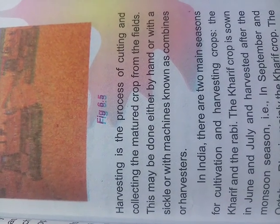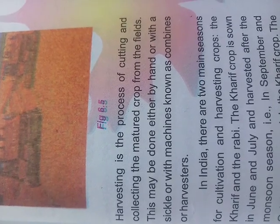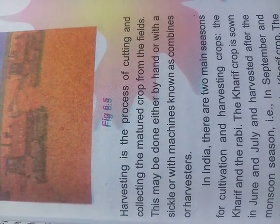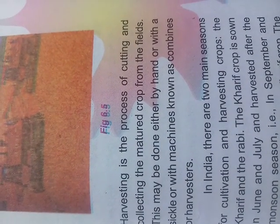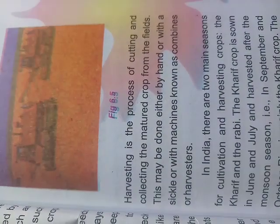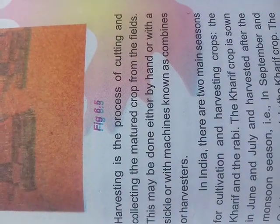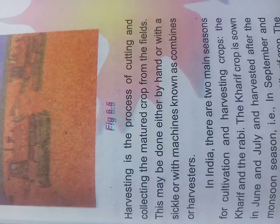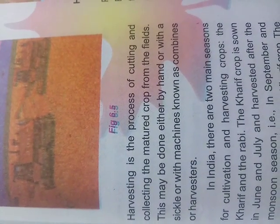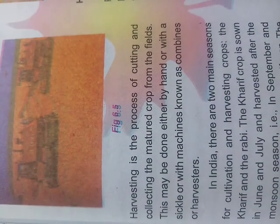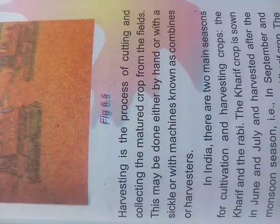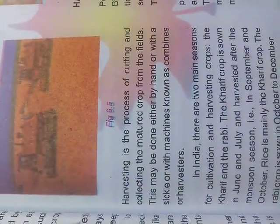Harvesting may be done with the help of hands, with the help of sickles, or with machines. These machines are also called combines or harvesters. For example, with the help of hands we harvest potatoes and tomatoes. With the help of a sickle we harvest paddy and maize crops. Maize and rice paddy plants are also harvested with the help of harvesters.